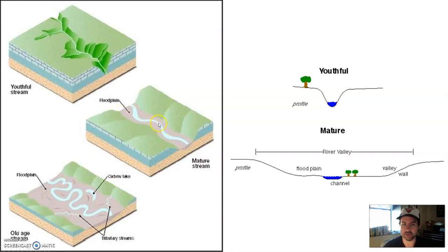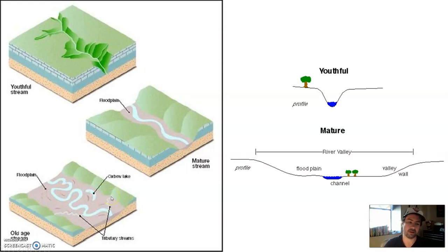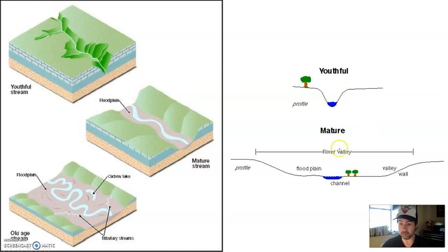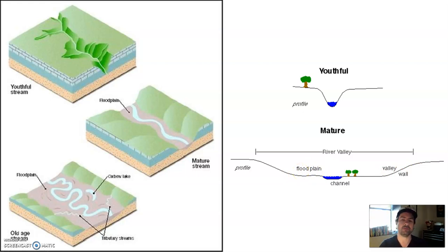A mature stream may begin to meander a little bit, but for the most part it's still pretty much a straight stream. As you get into old stream age, you have a big meandering stream, oxbow lakes, and wide floodplains — that's indicative of an old age stream, one that's been around for a while. As you cross from mature into old age, you're getting into a very wide floodplain. The easiest way to identify the stage is to look at how much floodplain the stream has.